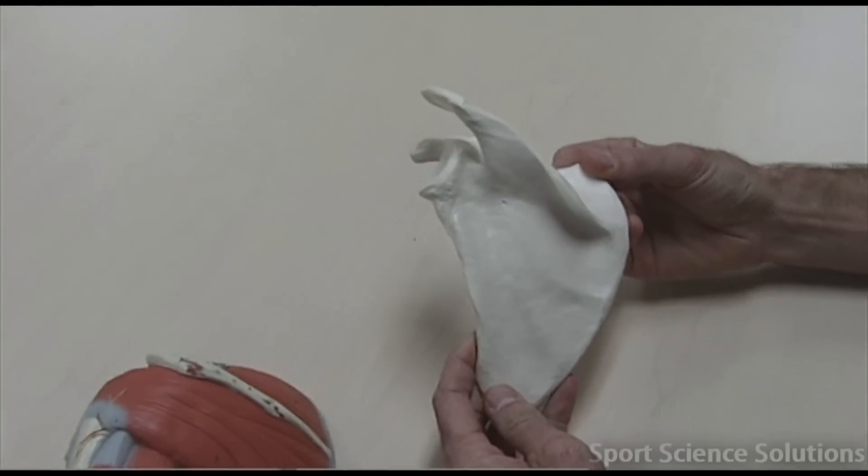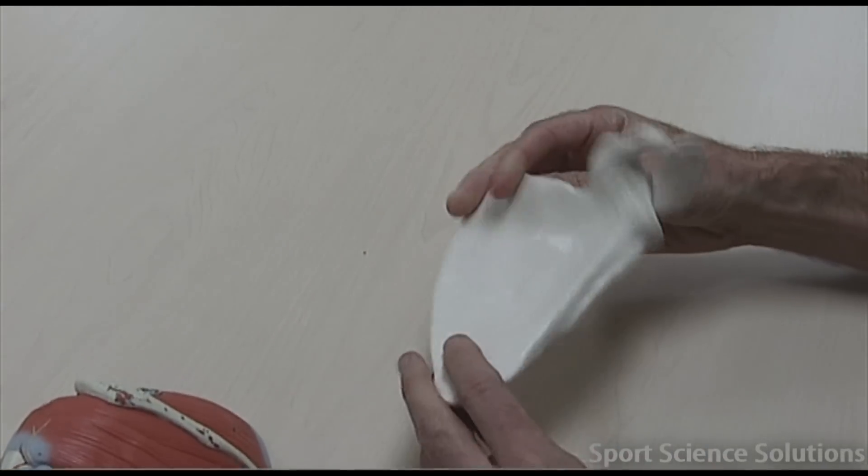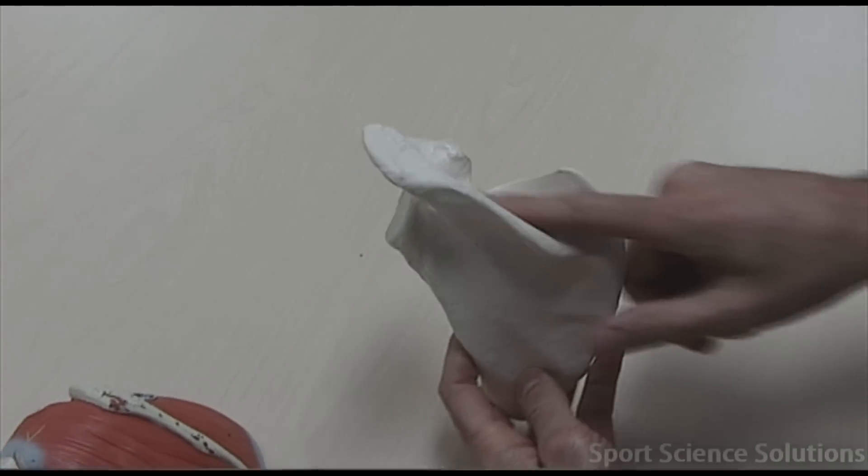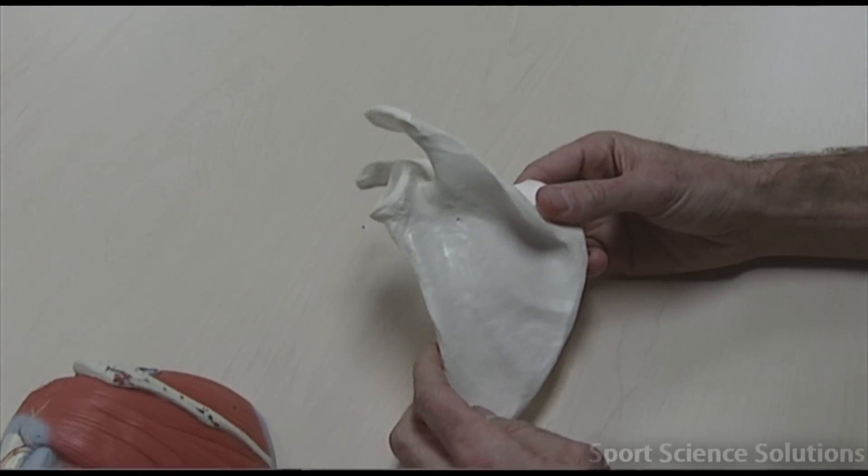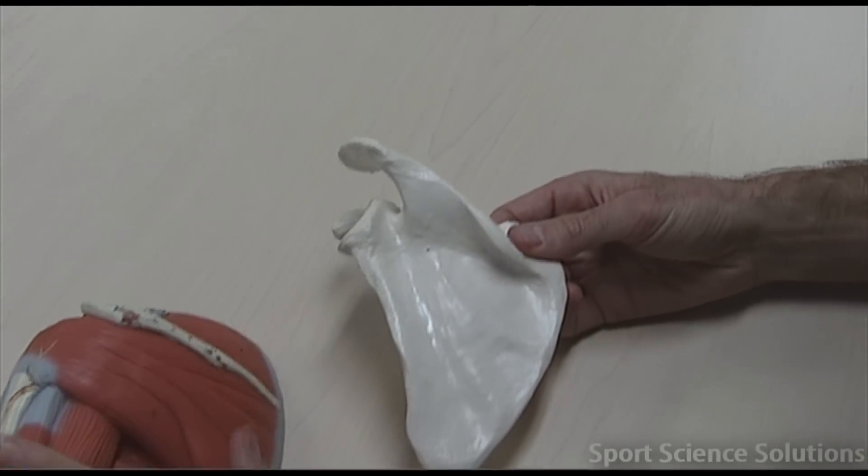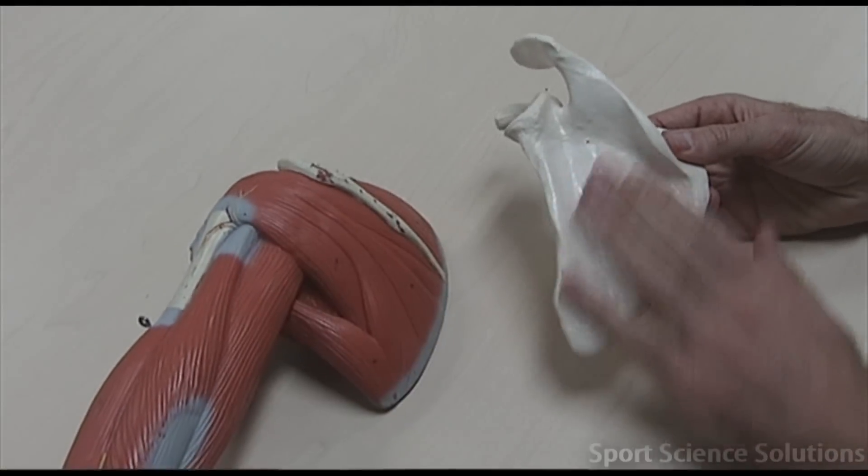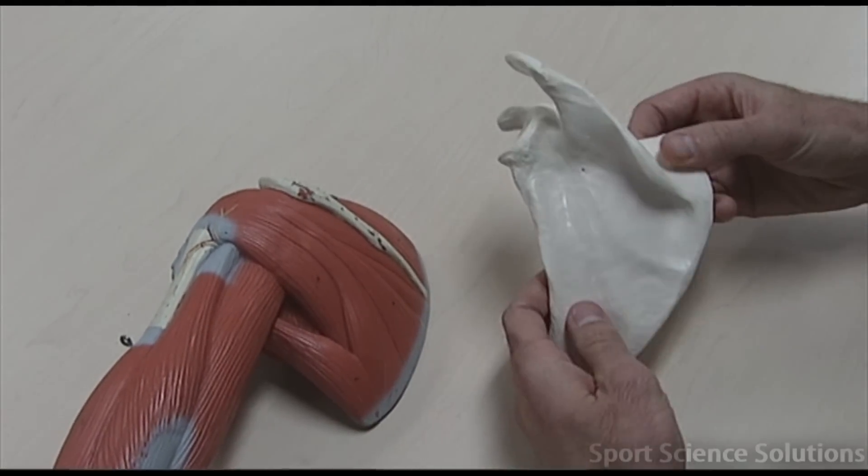When looking at a scapula, you might get asked what are these structures on the scapula? Now if we think about it in relation to the arm, they're actually easier to pick out than it might seem.